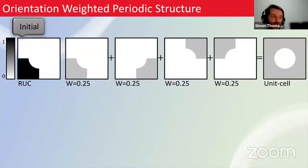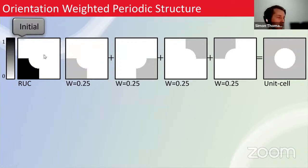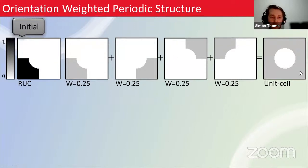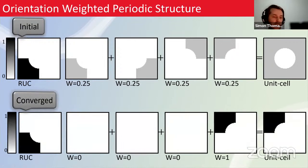To overcome the discrete problem, we use a SIMP approach to allow all orientation states of all unit cells to exist simultaneously within a periodic structure. For example: a unit cell design with four rotational orientation states, each with a weighting factor of 0.25, giving a cumulative unit cell in the macro structure. Through optimization, we drive those weighting factors to extreme values of zero or one, so only a single orientation state remains.